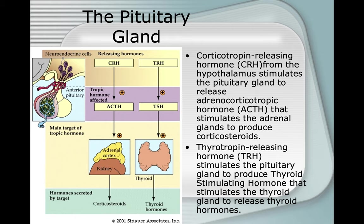Corticotropin-releasing hormone from the hypothalamus stimulates the pituitary to release adrenocorticotropic hormone, ACTH, which stimulates the adrenal glands to produce corticosteroids. Thyrotropin-releasing hormone, TRH, stimulates the pituitary to produce thyroid-stimulating hormone, TSH.